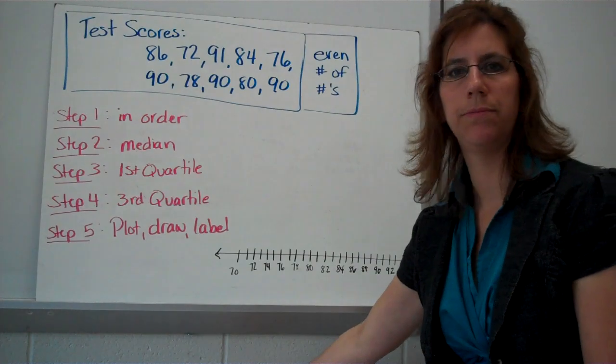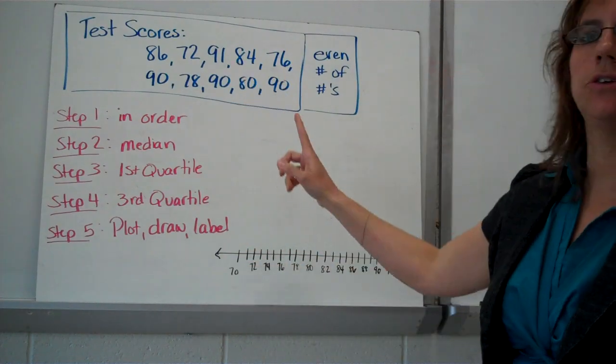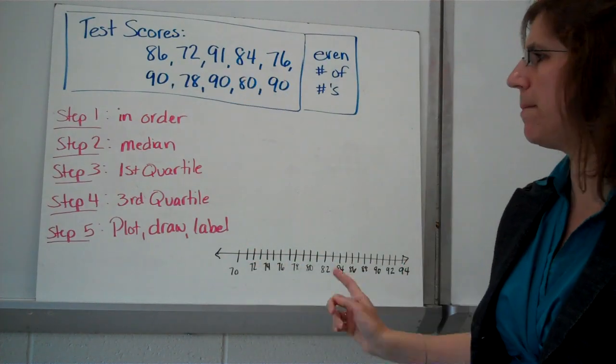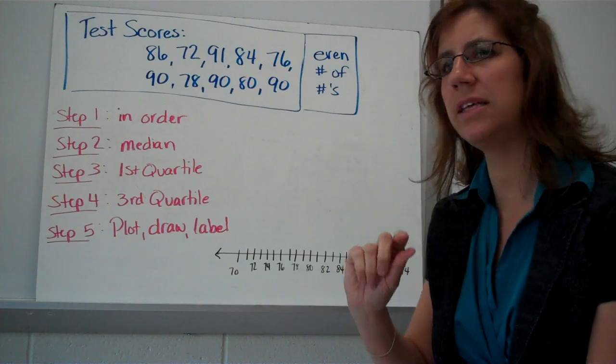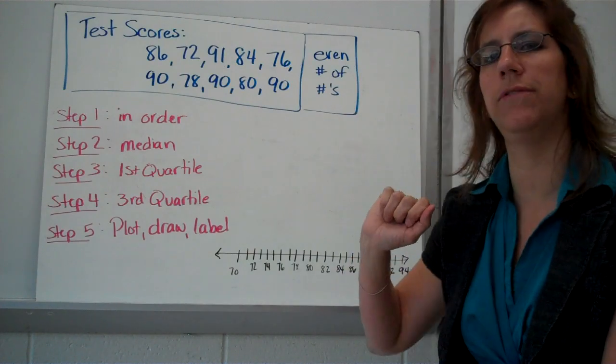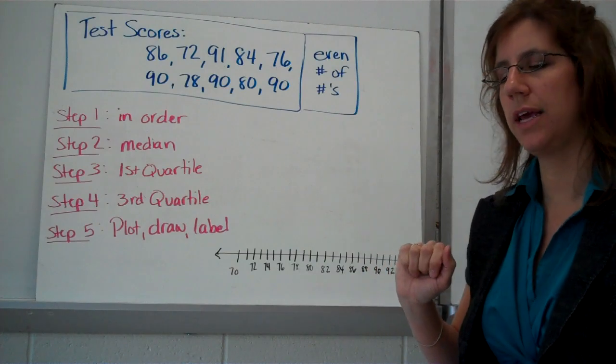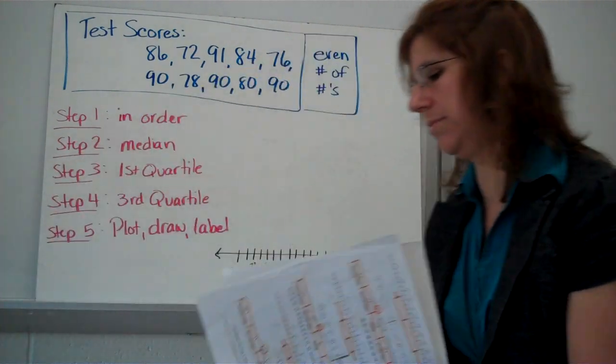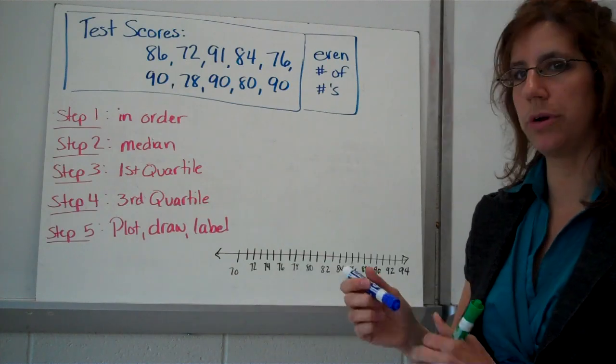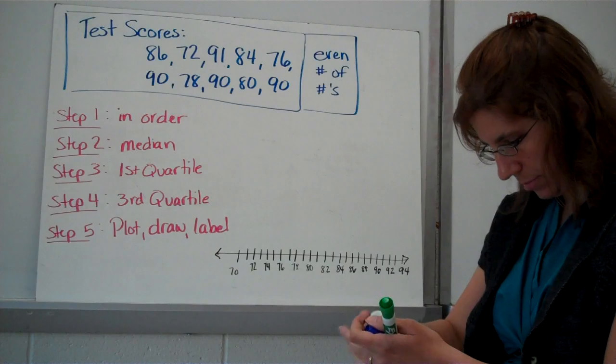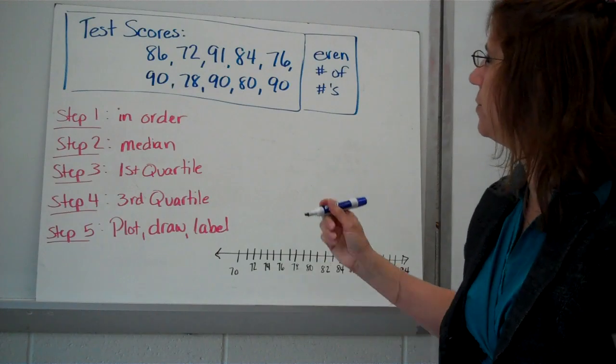All right? Let's have you do an example on your own. Go ahead and pause the video, write down your test scores, and see if you can do a box and whisker plot. And then come on back and we'll go over this one. This one is slightly different in that it has an even number of numbers. So let's see how you can handle that one. All right. Step one, put them in order. All right. Let's do it.